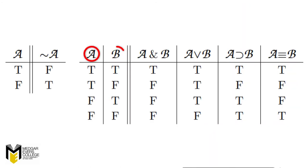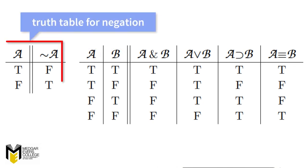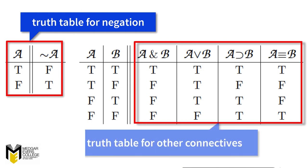The script letters a and b in the header row stand for metavariables, that is, any variable whatsoever. On the far left is the truth table for negation, and on the right is the truth table for the other four connectives. As you can see, the truth table for negation is shorter than the other table. This is because there is only one variable there, a, which can either be true or false.